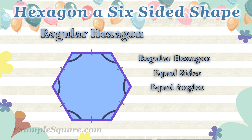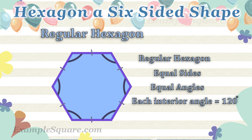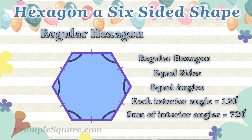A regular hexagon is usually the more familiar type of hexagon. A regular hexagon has six equal interior angles, and each of the angles of a regular hexagon equals 120 degrees. The sum of all the interior angles of a regular hexagon is 720 degrees.